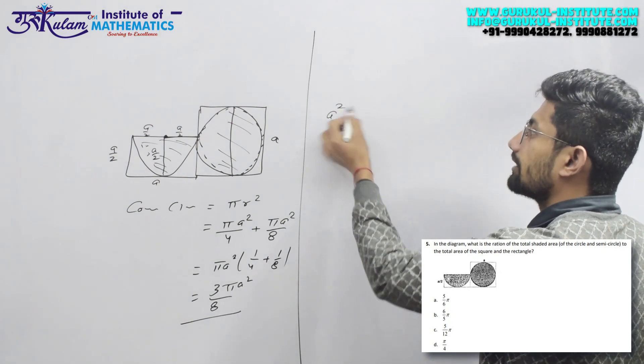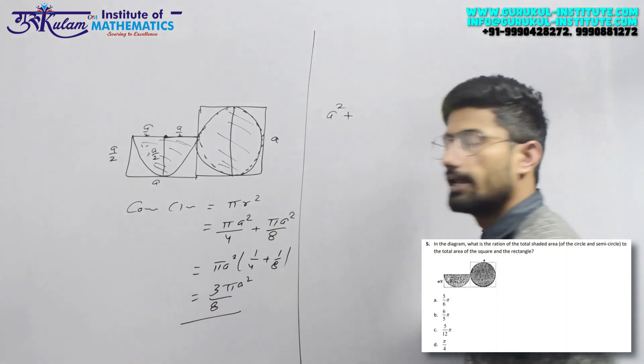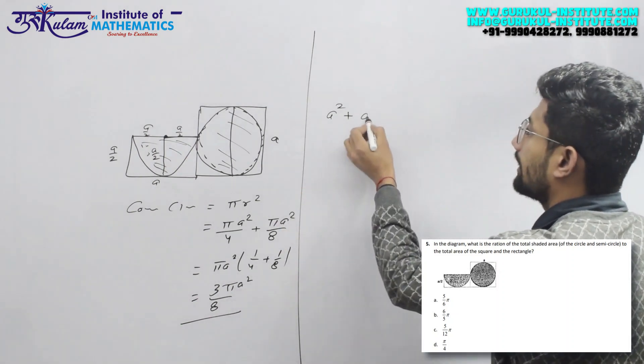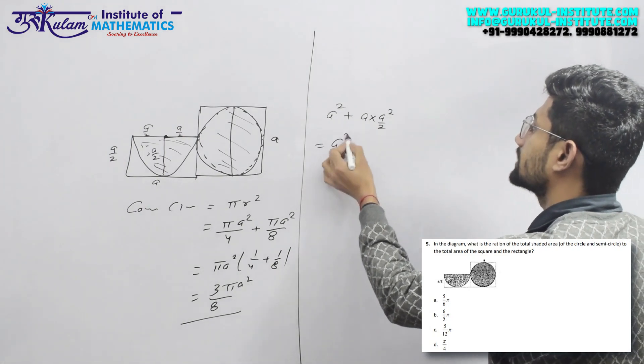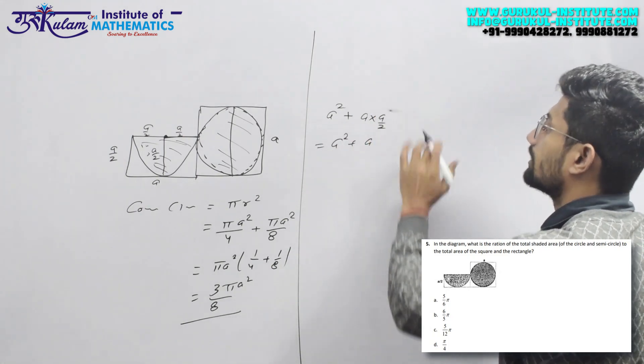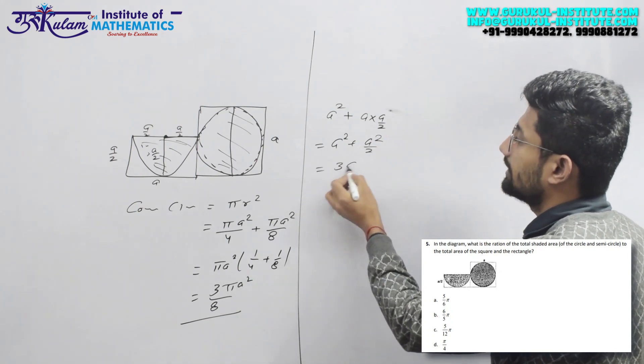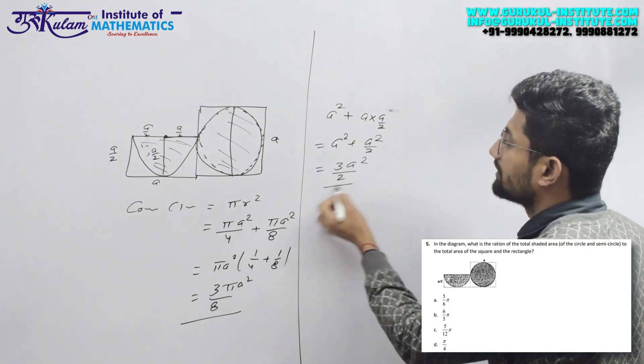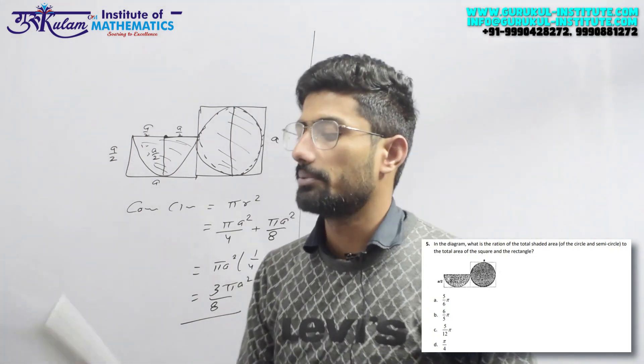Area क्या हो जाएगा? Side square a² हो जाएगा plus में इस rectangle का area, length into breadth, length की a है into में breadth a by 2 है, that is a² plus a² by 2, that is 3 a² by 2.